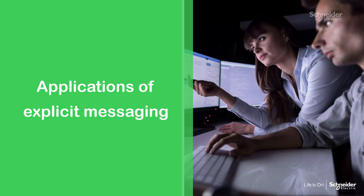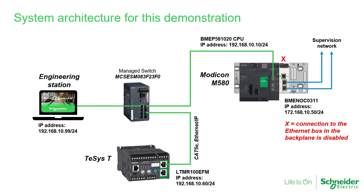Before we begin the demonstration, let's briefly discuss when explicit messaging could be required or useful for your projects. As reference information, this is a network layout of the equipment configured for this demonstration. Communication between an M580 ePAC and a TCST motor controller is configured for Ethernet IP protocol with implicit messaging through the use of an EDS file and its associated DTM object.